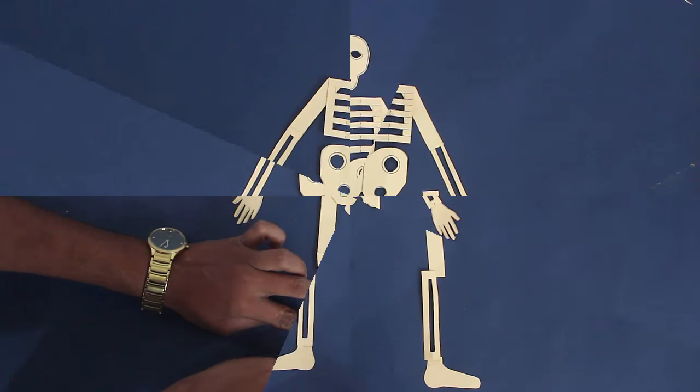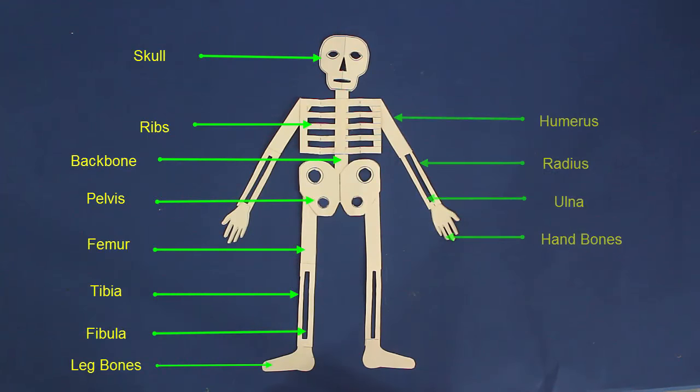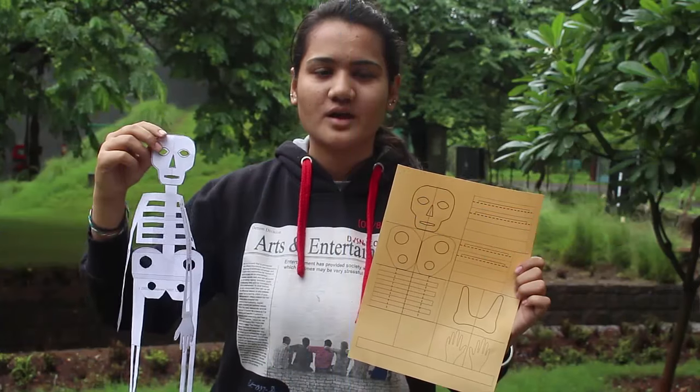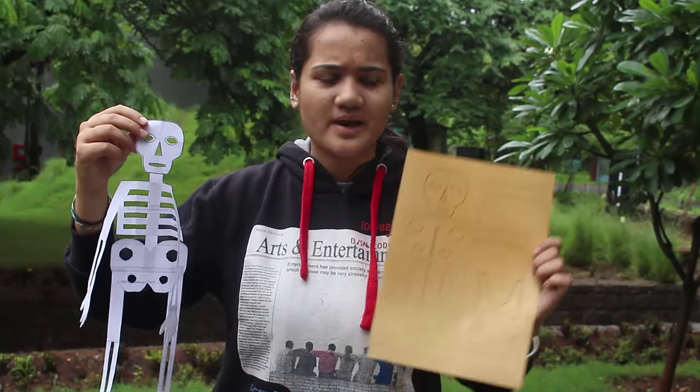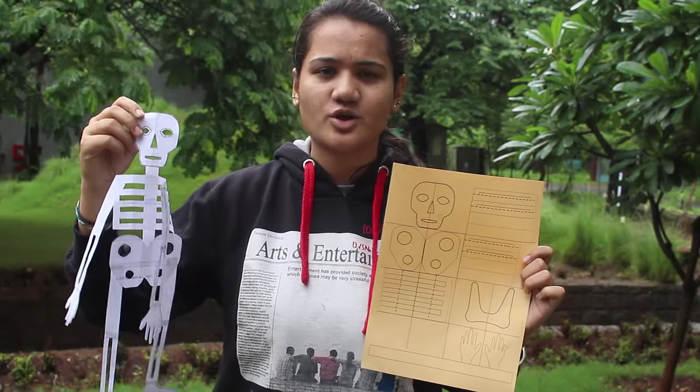Here you can see the major bones of the skeleton. They have been labeled. There are 200 odd bones in the human body. The paper skeleton is a great way to learn about the human body. We can use the portable skeleton from this A4 size paper and also learn about the structure of our bones.